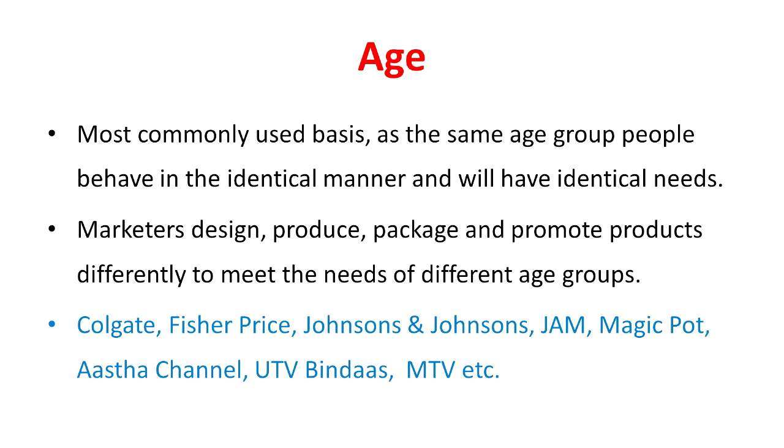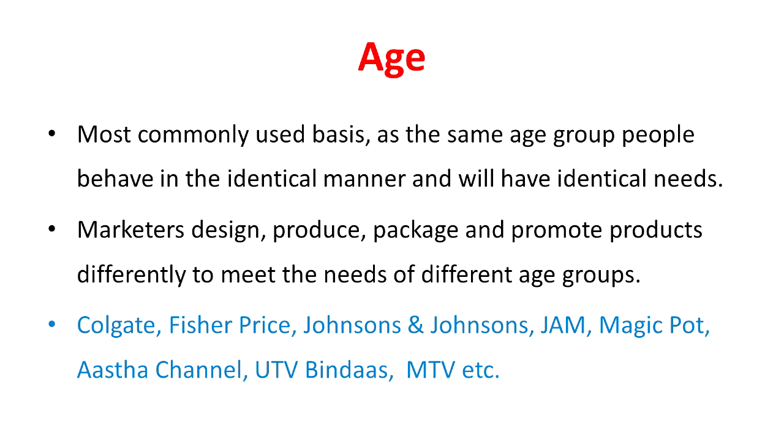The first element is age. Age is the most commonly used basis as the same age group people behave in an identical manner and will have identical needs. So youth will have identical needs among different people. That's why marketeers design, produce, package and promote products to different age groups. For example, Colgate has different products for different age groups like Colgate dental cream and Colgate kids toothpaste. On the basis of age, the leading toy manufacturer Fisher Price has 7 categories of toys.